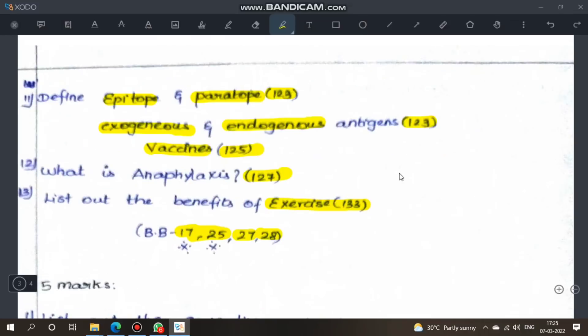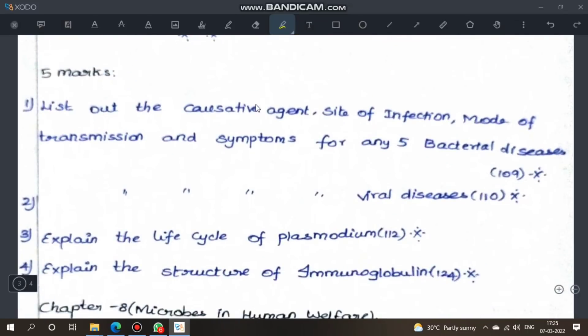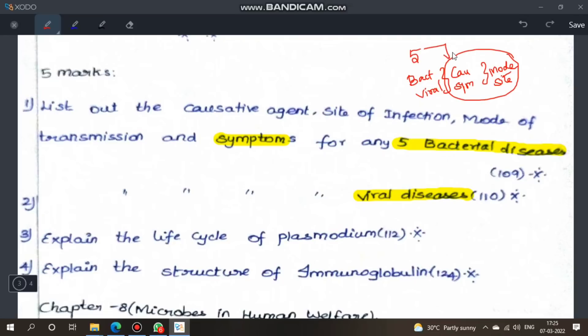Five marks: List out the causative agent, site of infection, mode of transmission, and symptoms for any 5 bacterial diseases. Same for any 5 viral diseases. Very important question. Sometimes mode of transmission and site of infection are asked separately.